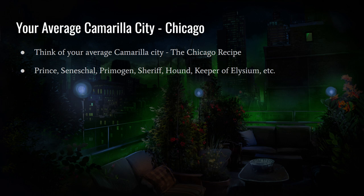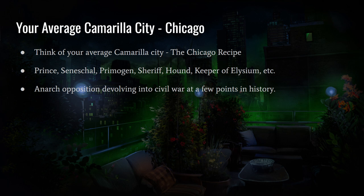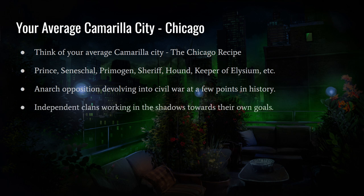Chicago introduced the Prince, the Seneschal, the Primogen — which wasn't even a thing in Gary because Gary was so small — the Sheriff, the Hound, Keeper of Elysium, all these things. They were kind of introduced in the Chicago setting. You had Anarchs with a long history of opposing the rulership of Loden — civil wars, a conflict between Gary and Chicago — and actual threats to the Prince's rulership from Anarch groups and workers' unions. You also had independent clans working in the shadows toward their own goals — the Giovanni, the Setites.